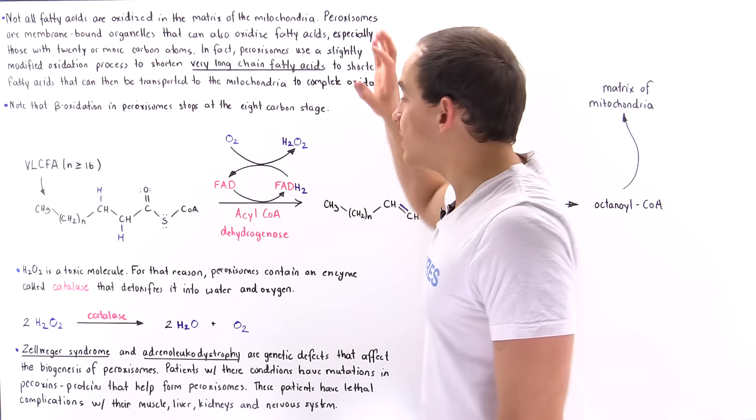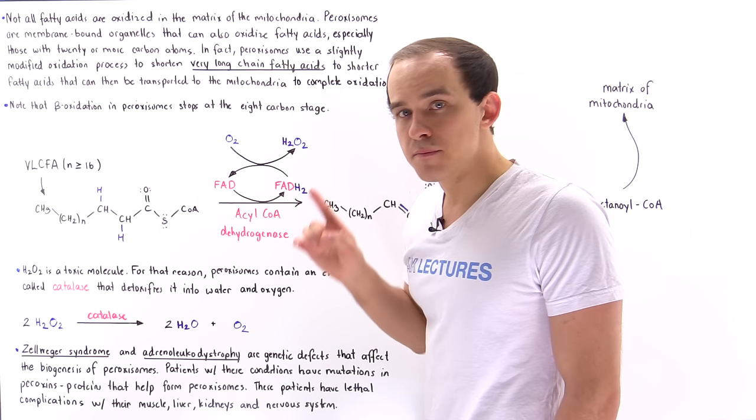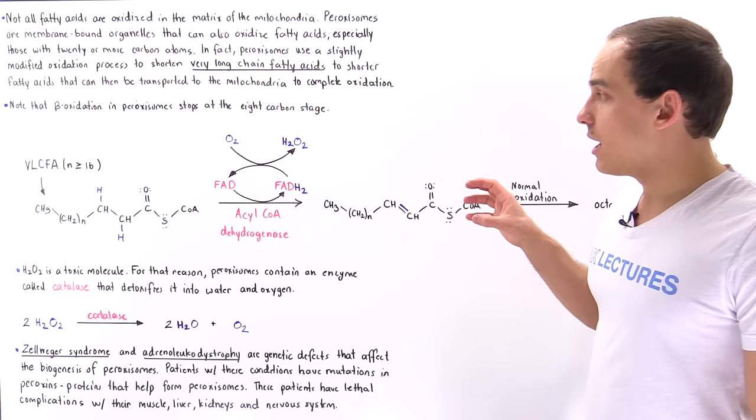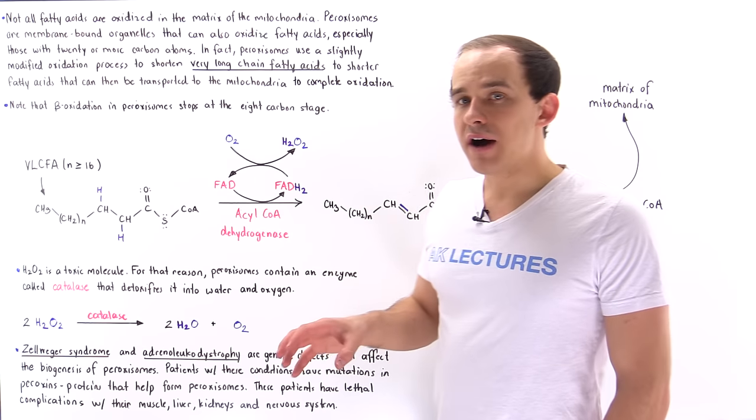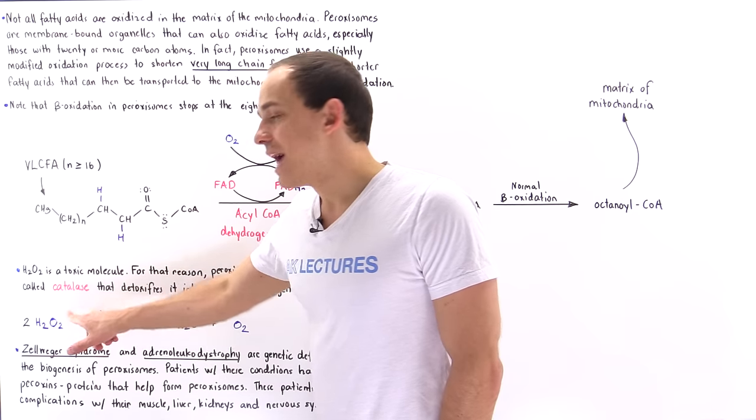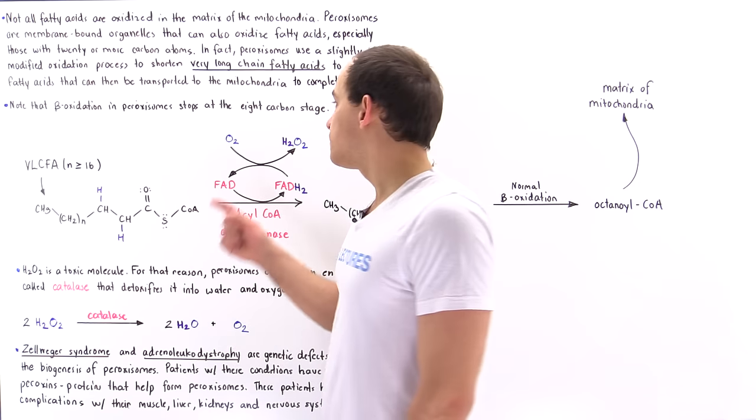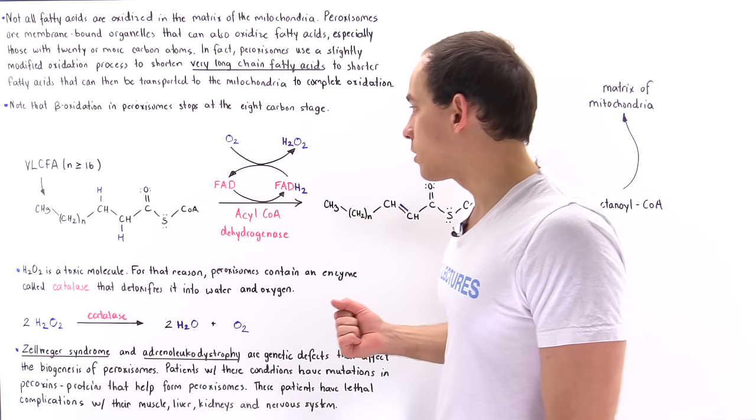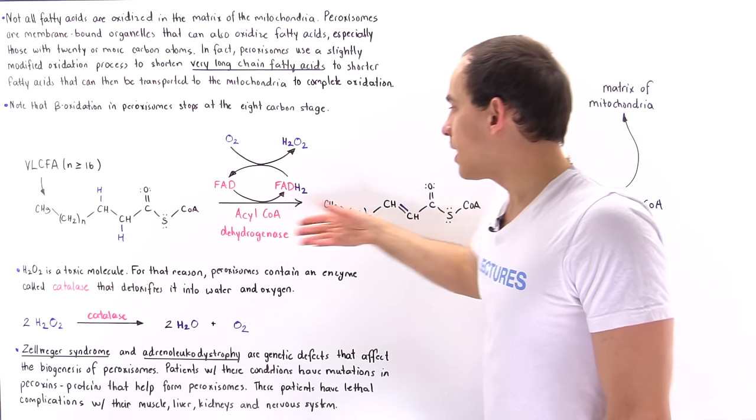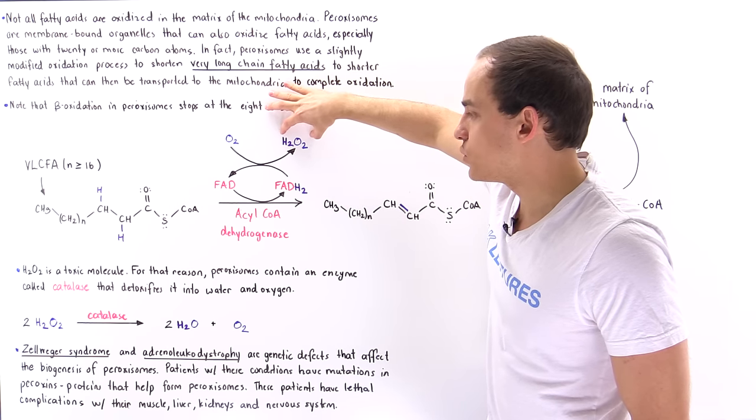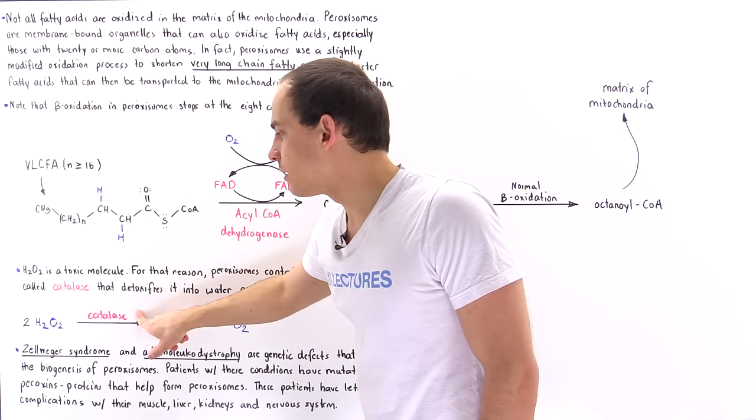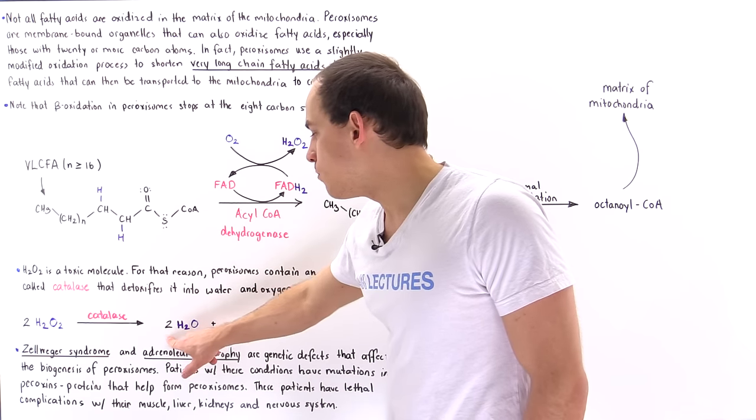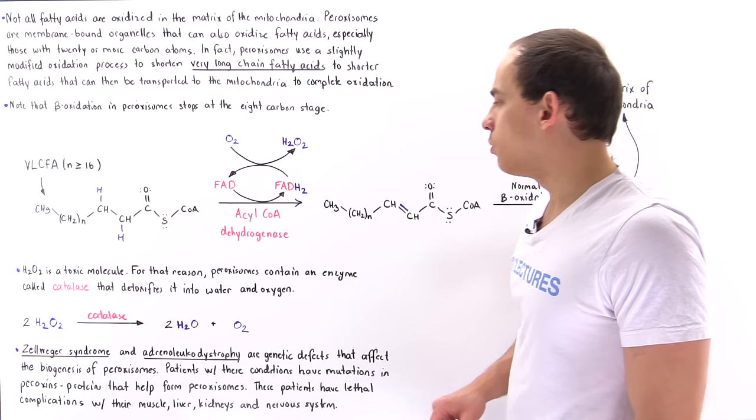And this is a very toxic molecule. And that's exactly why inside the peroxisome, we find another enzyme known as catalase. And it's the catalase that helps detoxify this hydrogen peroxide into oxygen and water. Once this process takes place and we form the H2O2 molecule, it's the catalase that acts on two moles of these molecules to form two moles of water and one mole of oxygen.